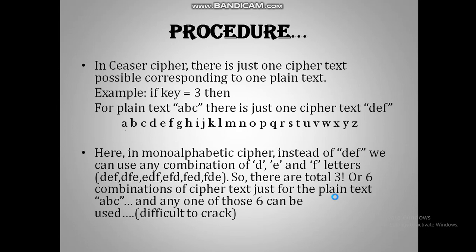What is the procedure? We all know the procedure used to encrypt messages using Caesar cipher, but I'll repeat it once. Say the chosen key is equal to 3 and ABC is the plain text. Then for A, you need to shift 3 positions to the right, so A gets encrypted to D. For B, do the same thing — B gets encrypted to E and C gets encrypted to F. So for ABC as the plain text, the only cipher text possible in case of Caesar cipher is DEF.